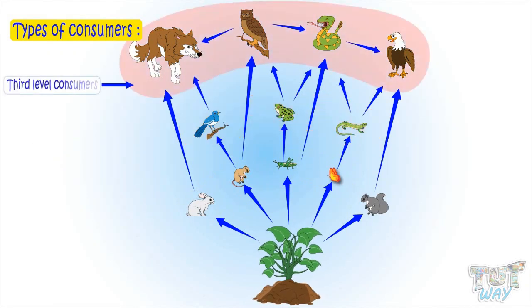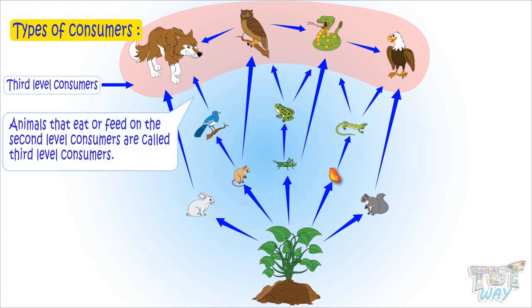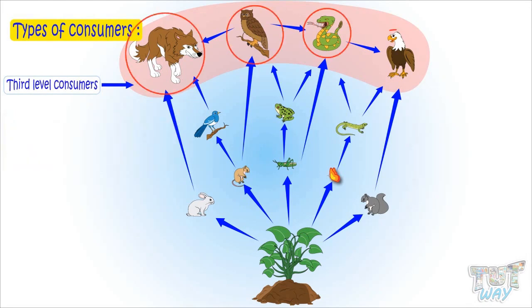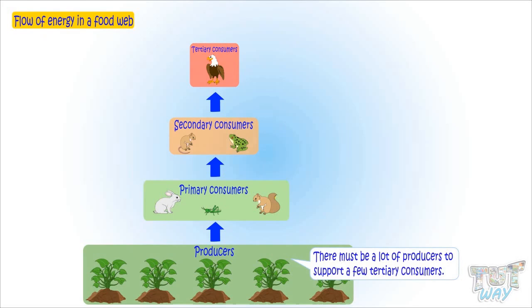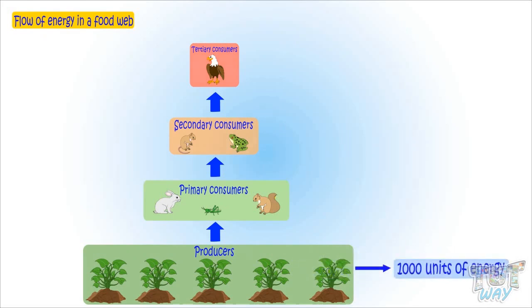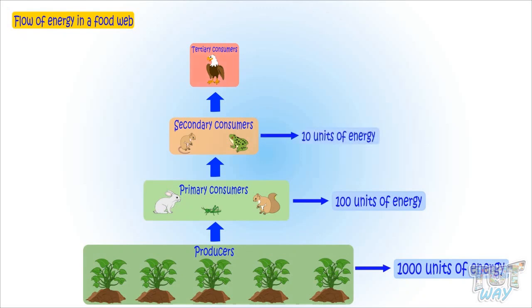Third level consumers are those that eat or feed on the second level consumers. There must be a lot of producers to support a few tertiary consumers. If there are 1,000 units of energy at producer level, primary consumers will get 100 units, secondary consumers will get 10 units, and tertiary or third level consumers will get only one unit of energy.